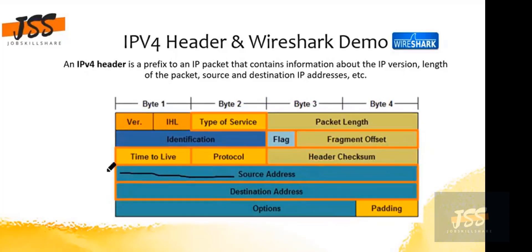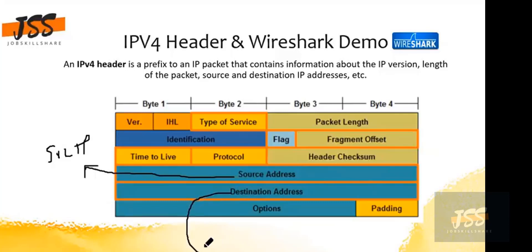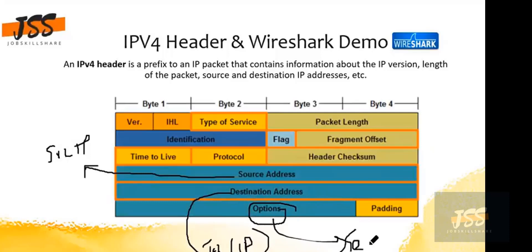These fields are straightforward. We have the source IP — this will be the source IP of your host machine. And this is your destination IP — let's say this is the Job Skillshare public or live IP. Then we have some options fields used for security or stamping purposes. These are not commonly used; if I show you in Wireshark, you will see there are no options present.